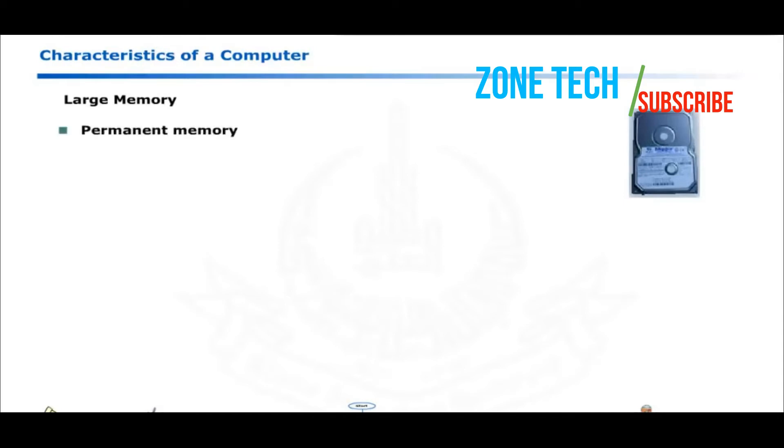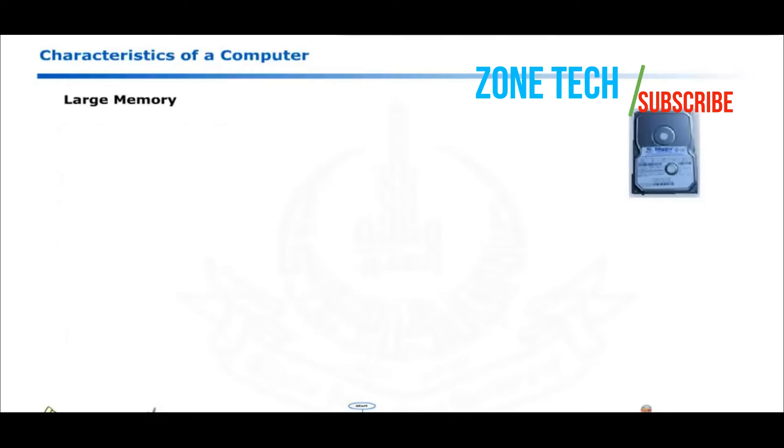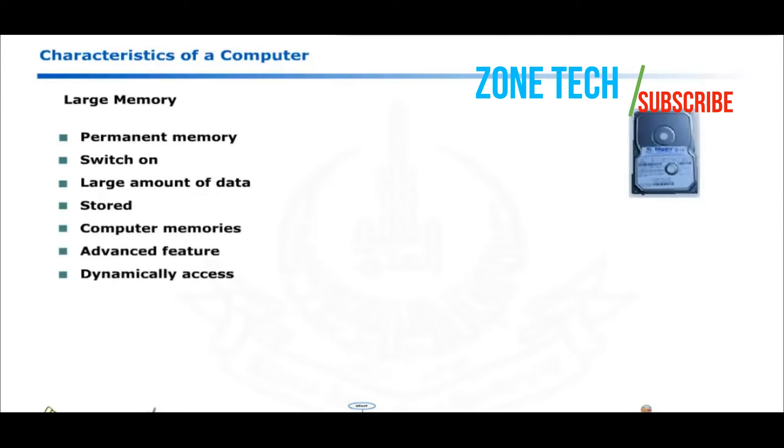Permanent memory is used to permanently store large repositories of data, user programs, applications like MS Office and operating systems like MS Windows or Unix. An example of permanent storage is hard disk. The programs stored on permanent memory are available when you switch on the computer. Large amount of data can be stored on permanent storage devices. Computer memories have another advanced feature to dynamically access any data irrespective of its storage location.